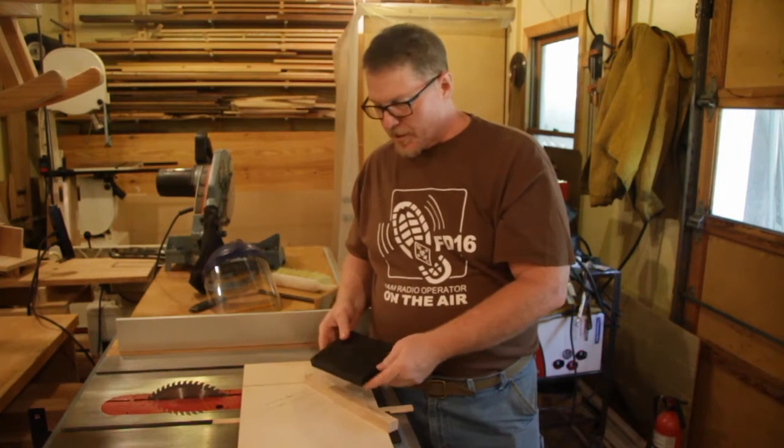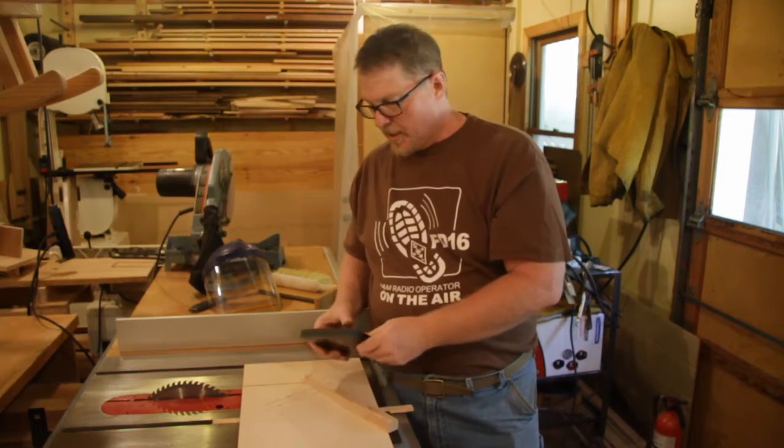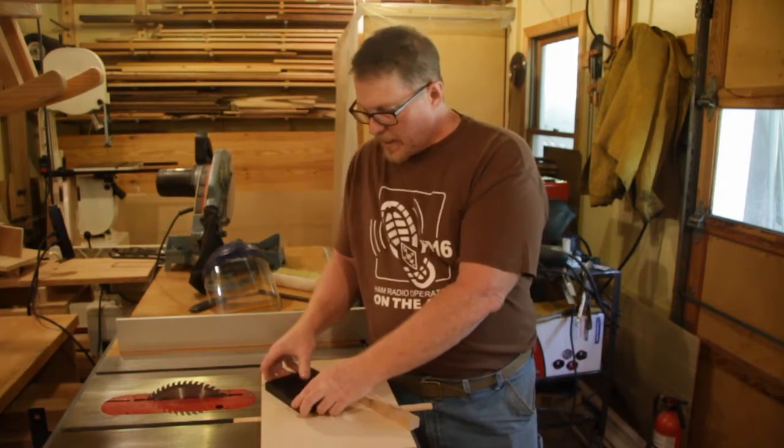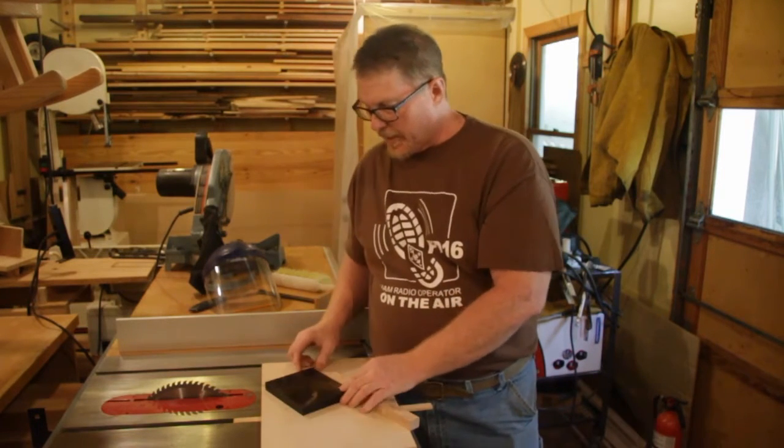At the table saw we're going to use a jig that I'm going to show you how to build to cut the polyethylene block into a hexagon.